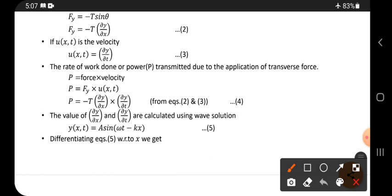If u(x,t) is the velocity, which velocity? It is the transverse velocity. Then u(x,t) equals ∂y/∂t. That is equation 3.